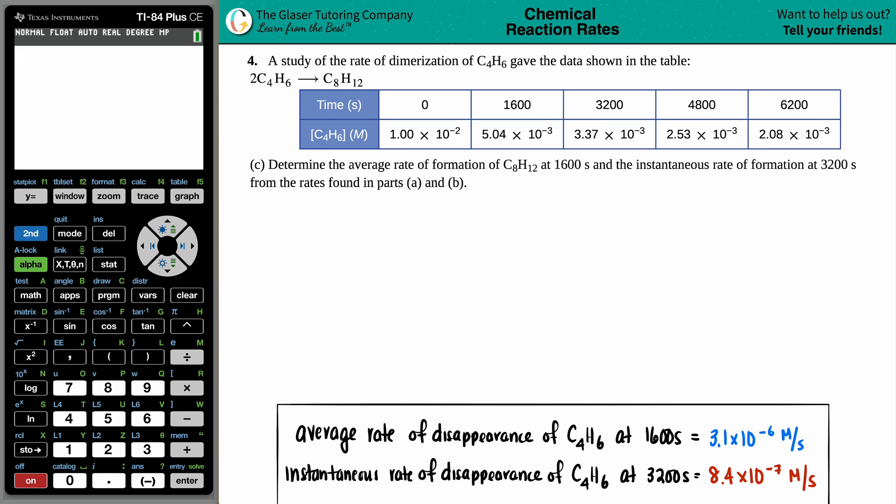For letter C, it says determine the average rate of formation of C8H12 at 1600 seconds and the instantaneous rate of formation of the C8H12 at 3200 seconds from the rates found in part A and B. Now we already found out the rates in part A and B of this question, so if you do need a recap you could always go back and check those videos out.